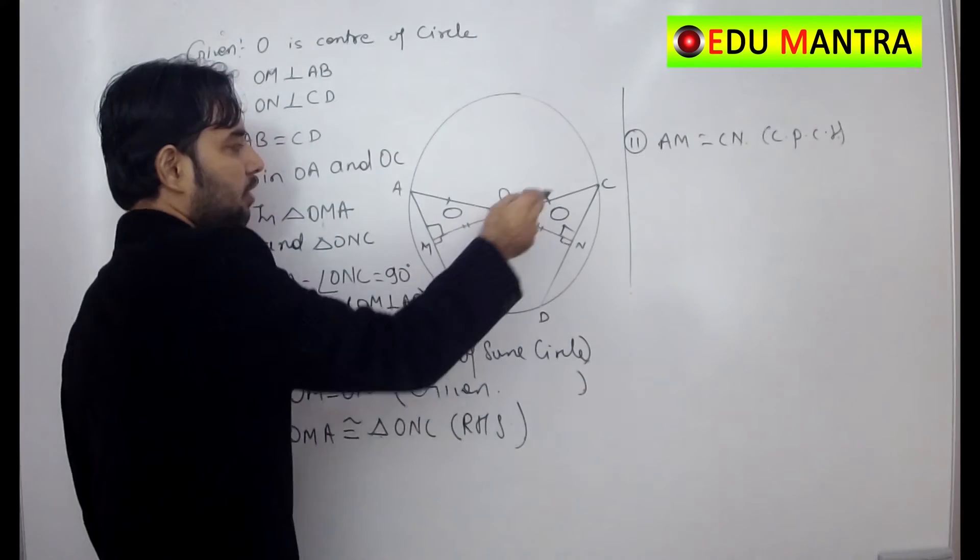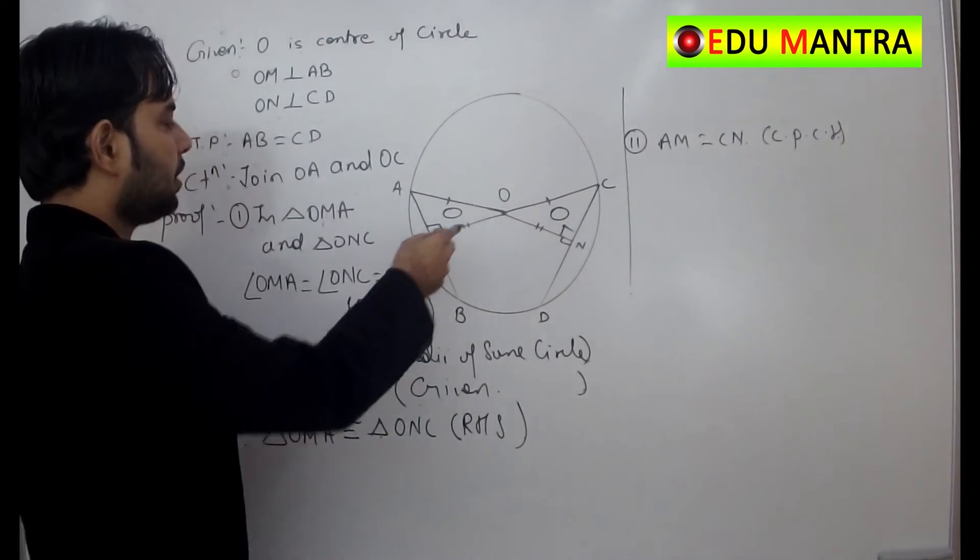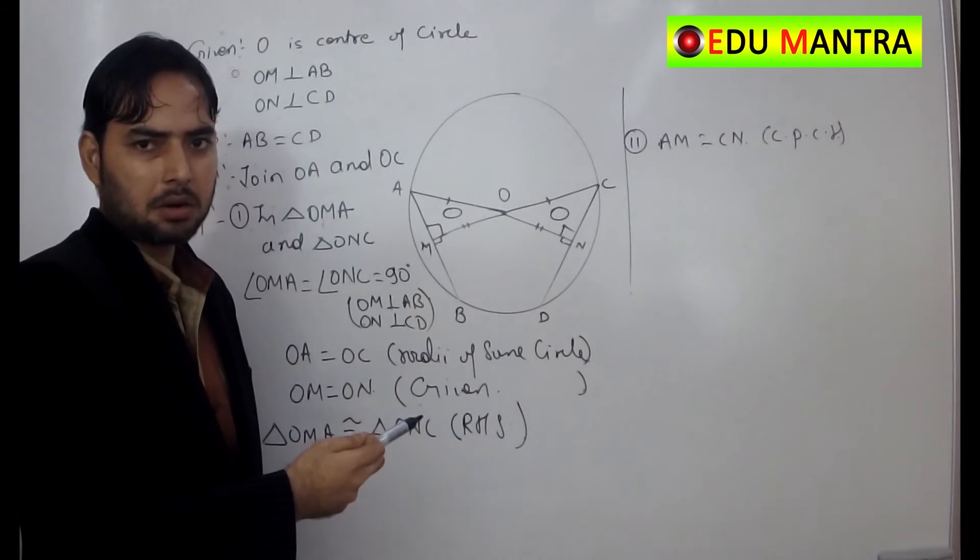If AM is equal to CN, then twice of AM will be equal to AB. Why? Because perpendicular from the center to the chord bisects the chord of a circle.